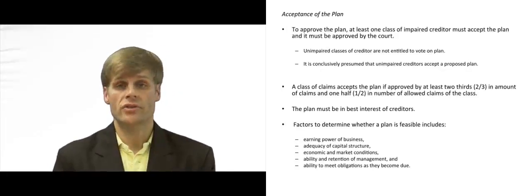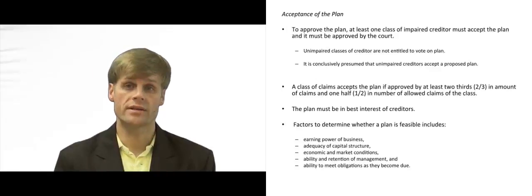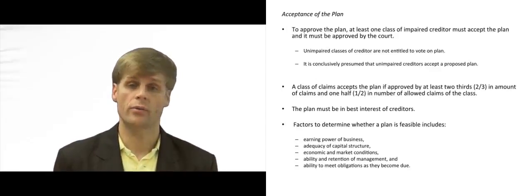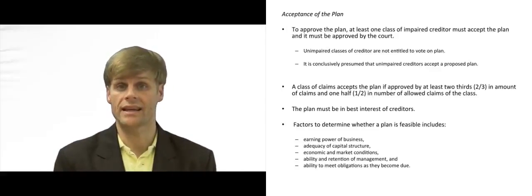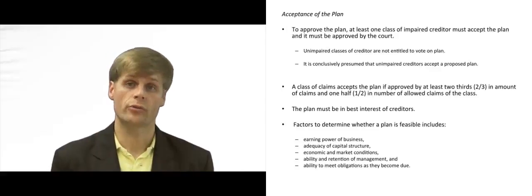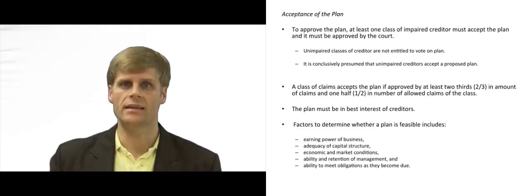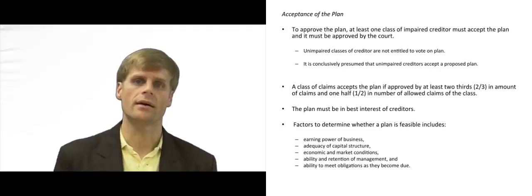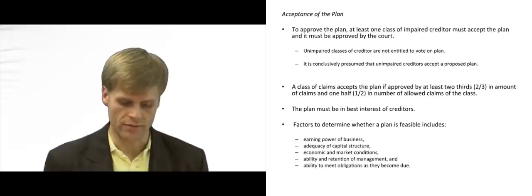The administrative priority given to certain creditors has to come first and must be paid on the date of approval of the plan. Any regular priority creditors also have to be paid in full on the date of approval, unless they themselves have agreed to or approved the plan and will be paid on a different date.